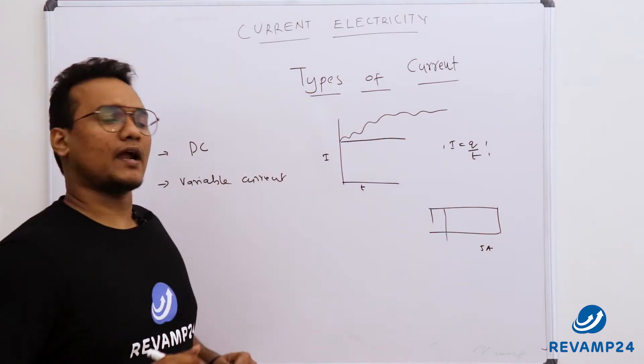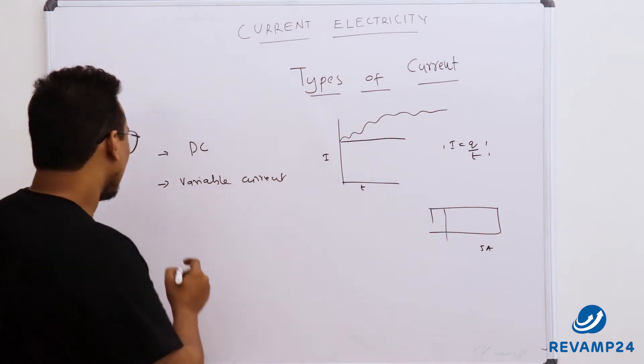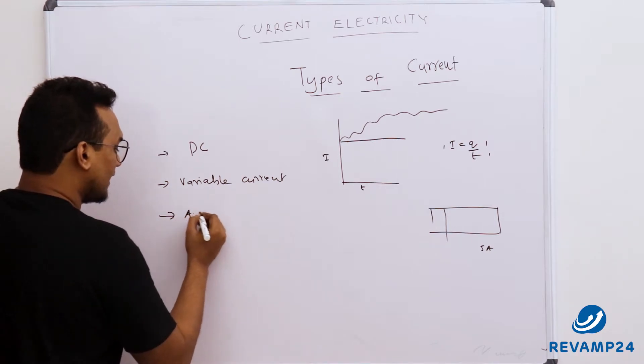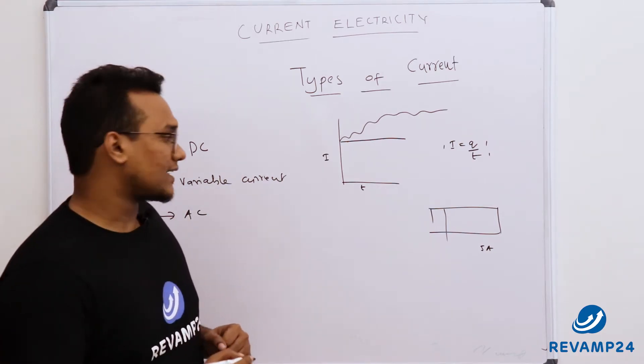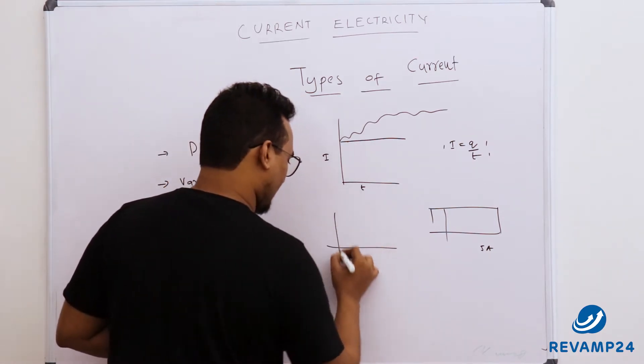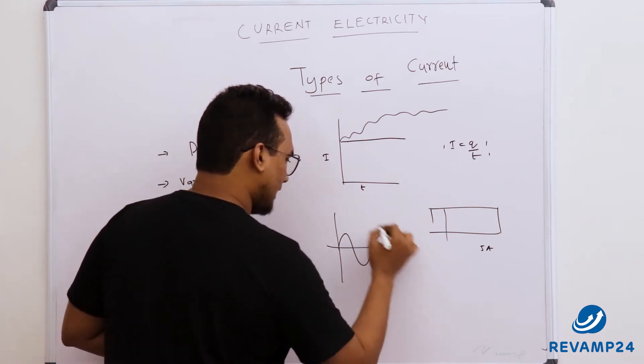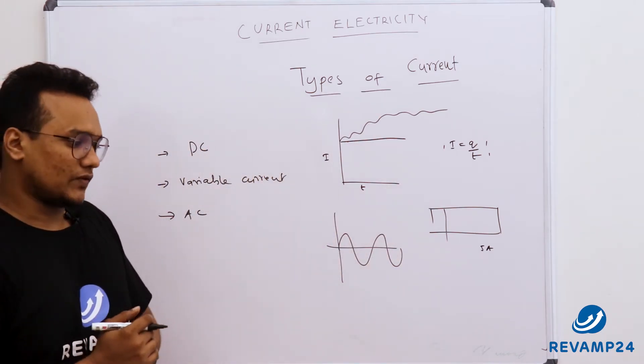And next one is very important, where it is AC current. What is AC current? We have seen the graph of AC current that can be represented in this way, but let me explain it to you.